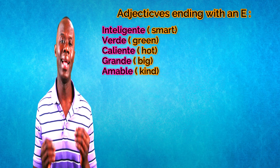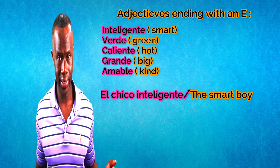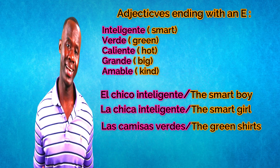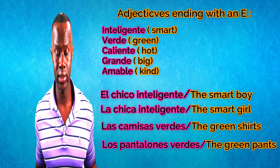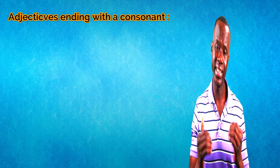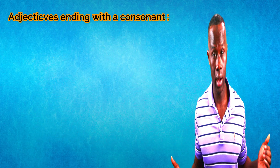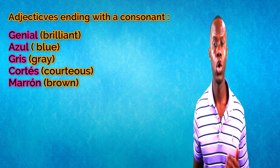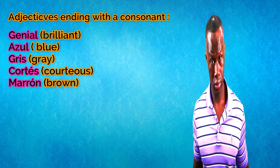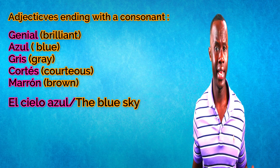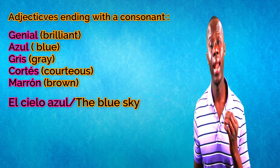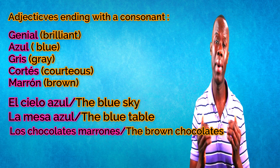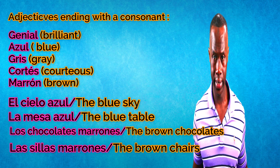For example: 'el chico inteligente,' 'la chica inteligente,' 'las camisas verdes,' 'los pantalones verdes.' Also, adjectives that end in a consonant, like genial, azul, gris, cortés, marrón — for example: 'el cielo azul,' 'la mesa azul,' 'los chocolates marrones,' 'las sillas marrones.'